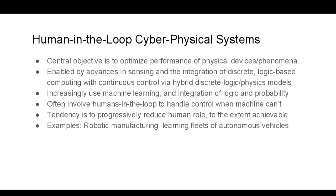The central objective of much of the work on human-in-the-loop cyber physical systems is to optimize the functionality and performance of physical devices, as opposed to complex human-intensive socio-technical systems. All of this work in CPS is enabled by advances in sensing and the integration of discrete computing through a kind of integration of control theory and logic leading to models such as hybrid automata. These systems increasingly use machine learning, and now we're seeing the integration of discrete logic and probability theory to enable CPS to deal with uncertain environments. The tendency in this space is to progressively reduce the human role to the extent possible.